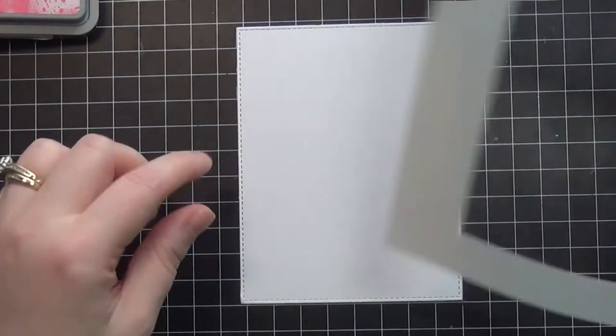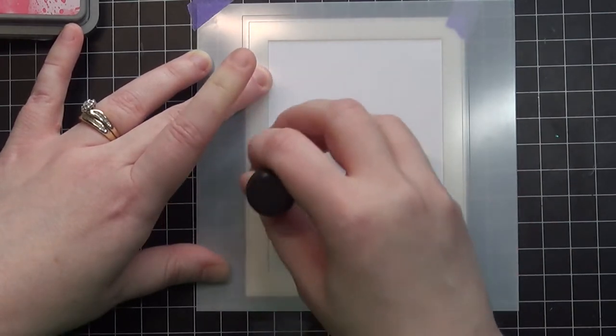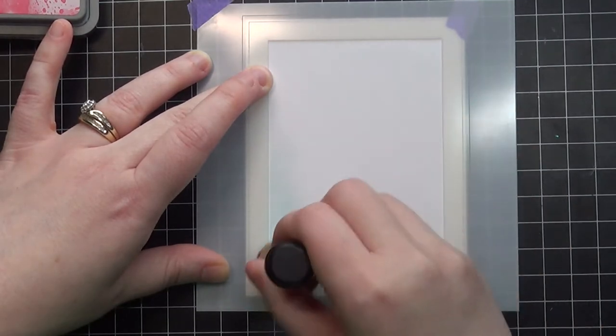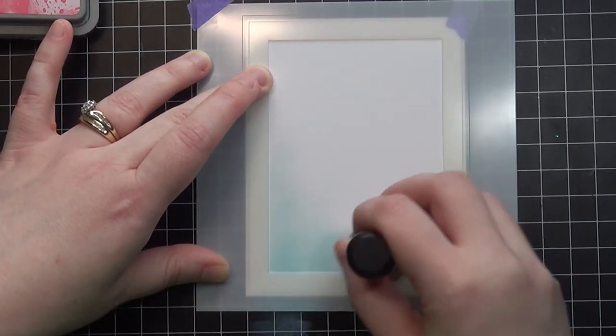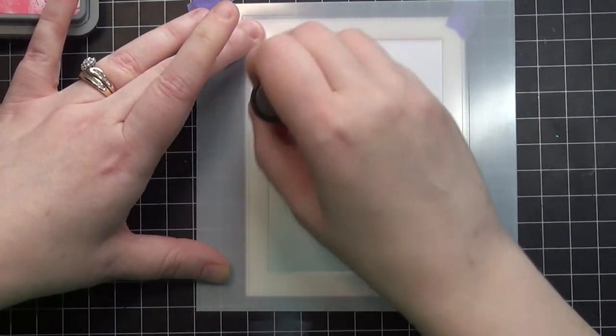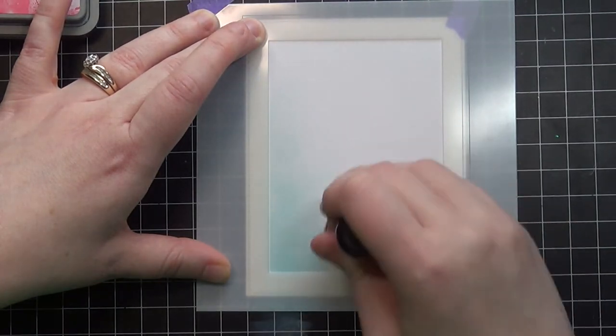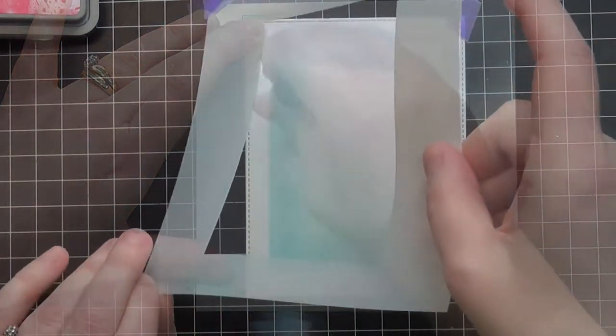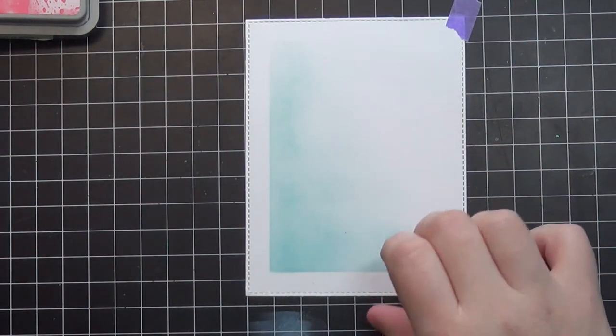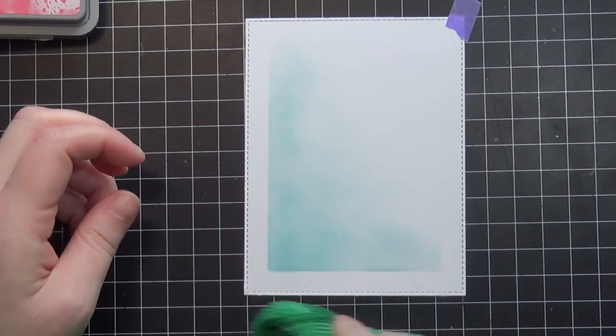I'm going to start out by using these masking stencils from Tailored Expressions, the rectangle set. I love these little stencils because you can do all sorts of masking with them and make it look like you've got different layers when you really don't. I'm creating a backdrop in the lower left corner that fades up into white using my Distress Oxide ink in Tumbled Glass.